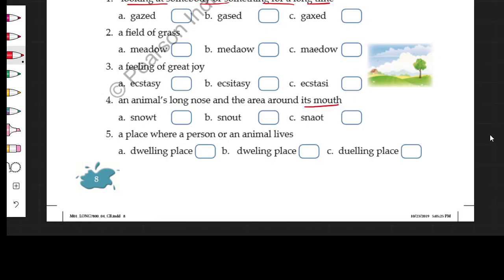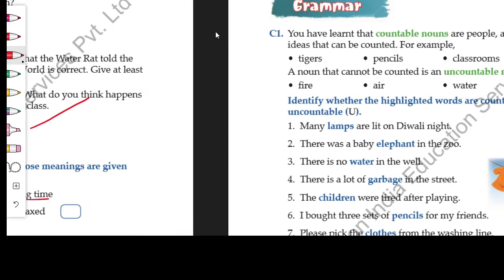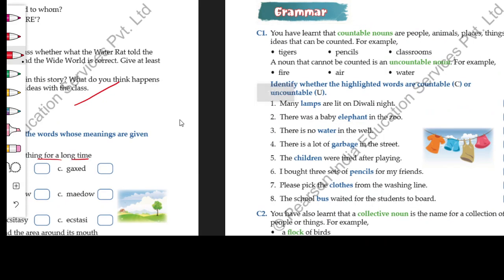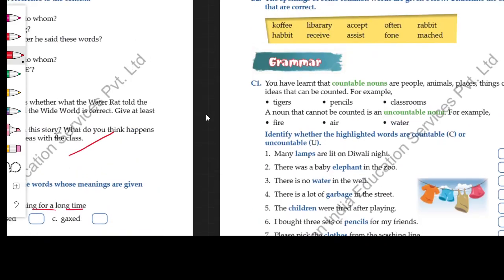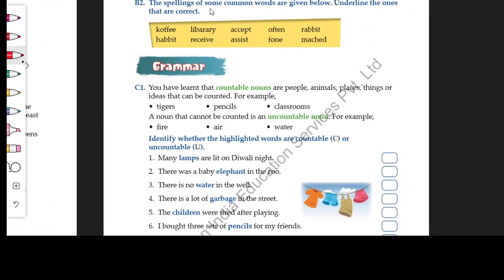Now the next task in the vocabulary section is also based on the knowledge of correct spelling. So here you are given spellings of some common words. Some common words' spellings are given here and you have to identify which spellings are correct. For example: coffee, library, accept, orphan, rabbit, habit, receive, assist, phone, matched.